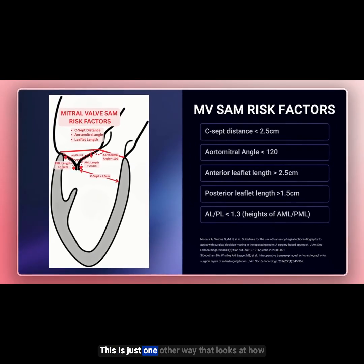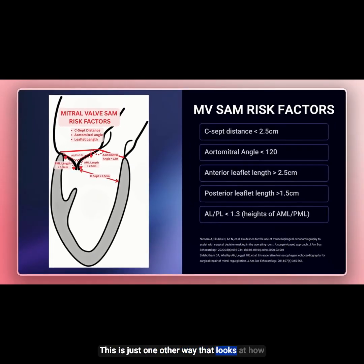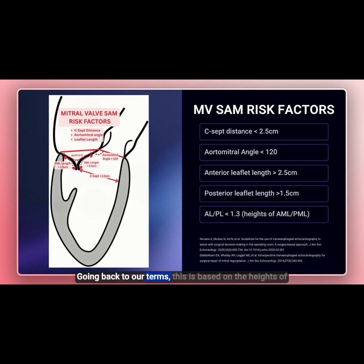This ratio is one other way to look at how posteriorly the coaptation point is located. This is based on the height of the anterior and posterior mitral leaflets, not the length.